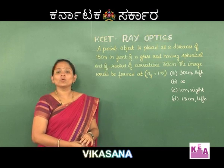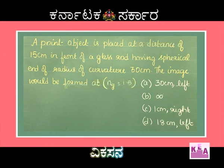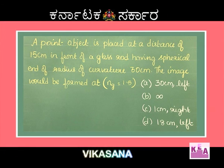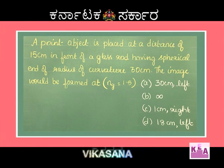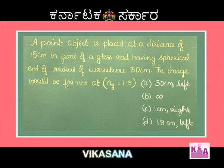Let us move on to the next question. A point object is placed at a distance of 15 cm in front of a glass rod having a spherical end of radius of curvature 30 cm. Where will the image be formed? The refractive index is 1.5. Options: A. 30 cm towards left, B. infinity, C. 1 cm towards right, D. 18 cm towards left.